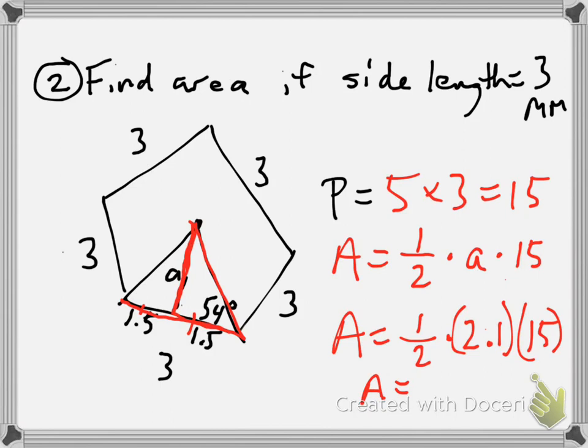Using the calculator in my phone because my battery is dead—0.5 times 2.1 times 15. You're gonna get 15.75 millimeters squared. You want to round that to 15.8, you can certainly do that.